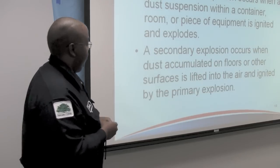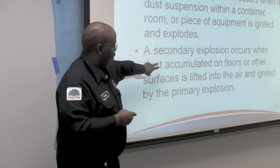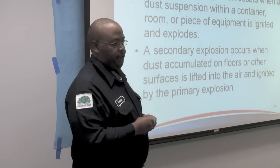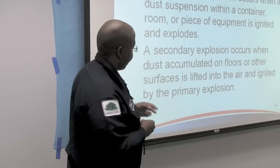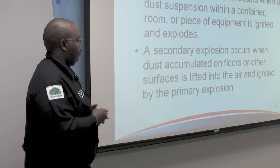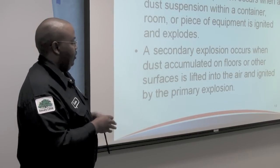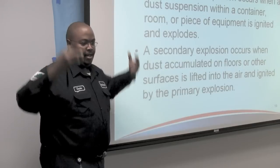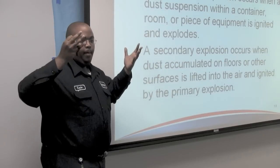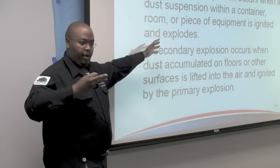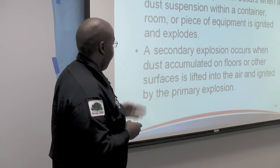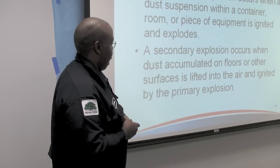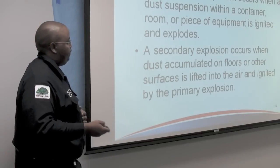The secondary explosion is generally the one that is more deadly and has more catastrophic results. It occurs when dust accumulated on floors and other areas — that unseen dust — is stirred up as a result of the primary dust explosion, and then is ignited in air.